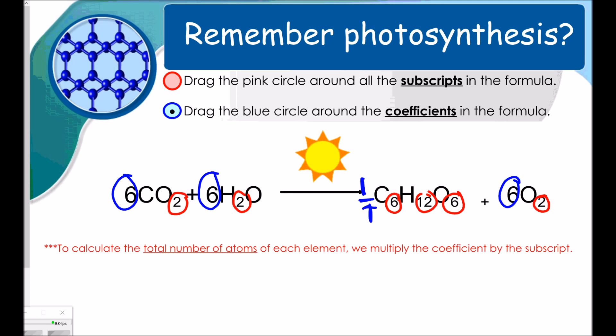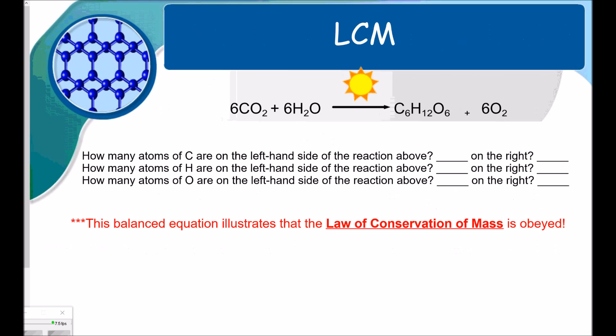Now at the bottom of my page, it says, To calculate the total number of atoms of each element, we multiply the coefficient by the subscript. So how many atoms of carbon are on the left-hand side of the reaction above? So to figure that out, I'm going to multiply the coefficient by the subscript. Again, when there isn't 1, we assume that there's a 1 there. So I would say there's 6 carbons on the reactant side. And then on the product side, I have 6 as well. Remember, the coefficient would be a 1. So 1 times 6 is 6.